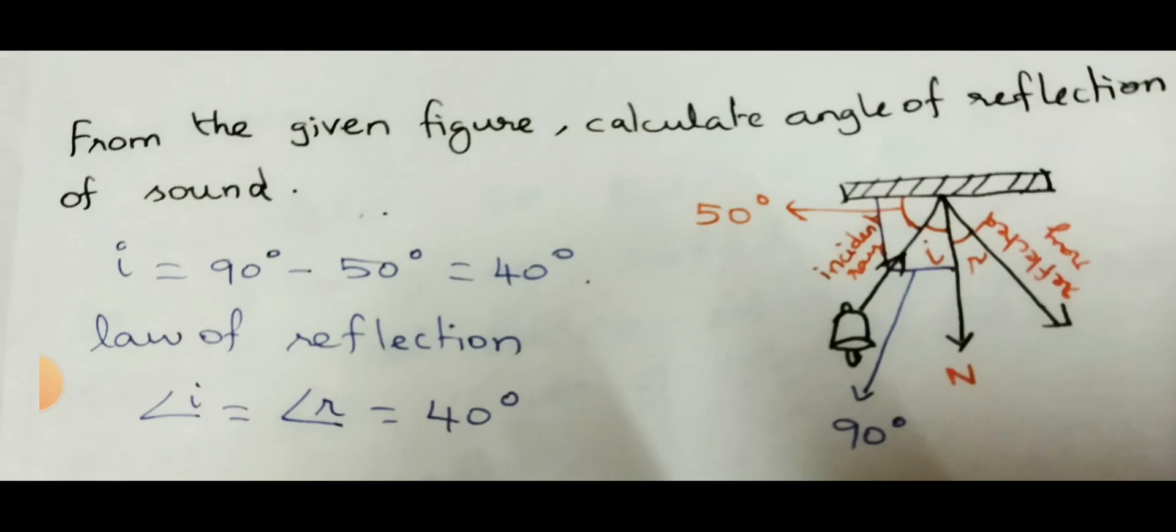The next question: from the given figure, calculate the angle of reflection of sound from the diagram. So what they are given, the 50 is given. So the angle between the surface and the normal is 90 degree. 90 degree as represented in the diagram. So the I is nothing but 90 minus 50. It is 40 degree.